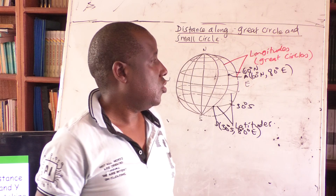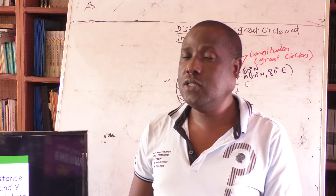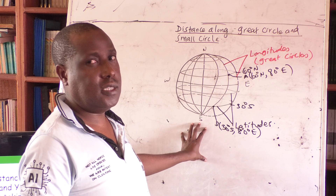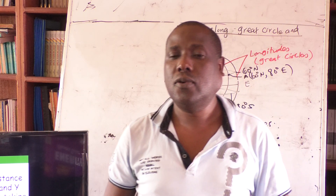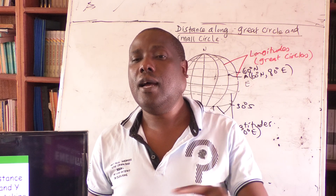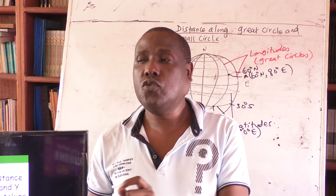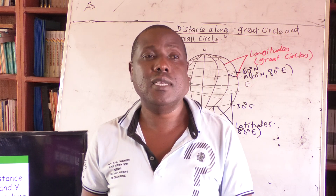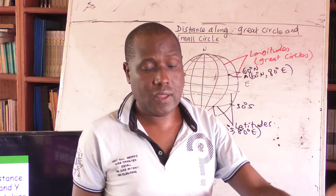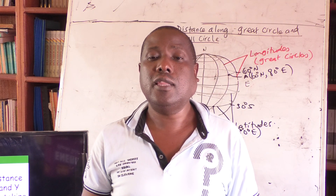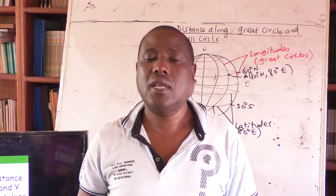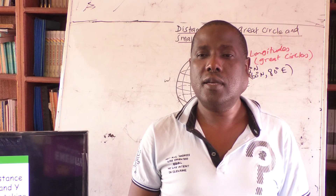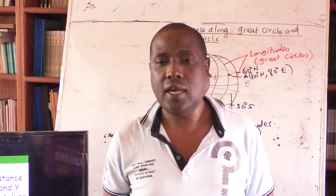Going back to your Form 2 knowledge — when you talk about areas of sectors, you learned about arc length. We'll apply that same knowledge here. An arc is a part of a circumference. Since we know the formula for circumference is 2πr, when we look for the arc length — which is the same as distance along either a great or a small circle — we apply the formula: theta over 360, times the circumference 2πr. The radius of the earth is approximately 6,370 kilometers.